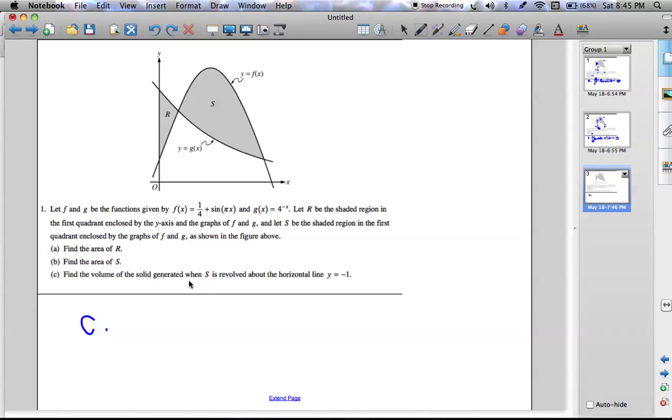Part C: Volume of the solid generated when S is revolved about y equals negative 1. Negative 1 is down here.